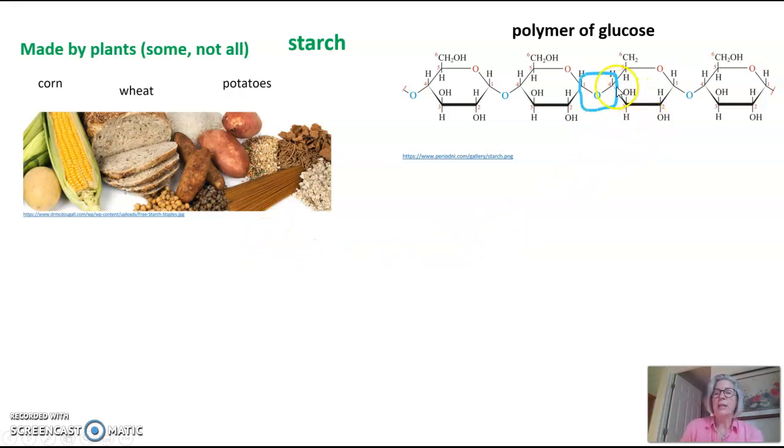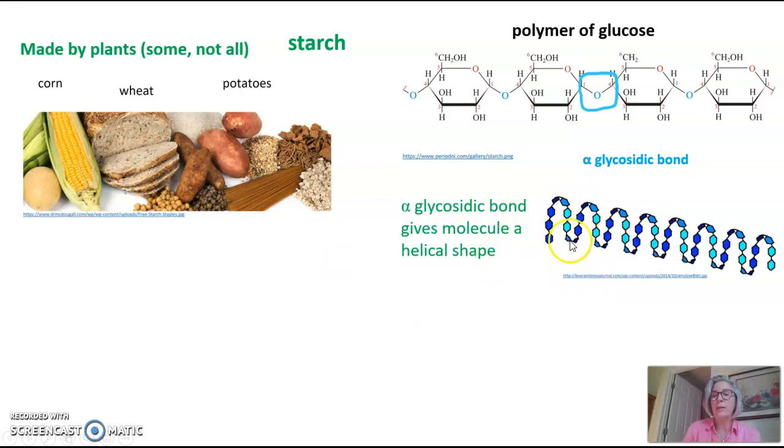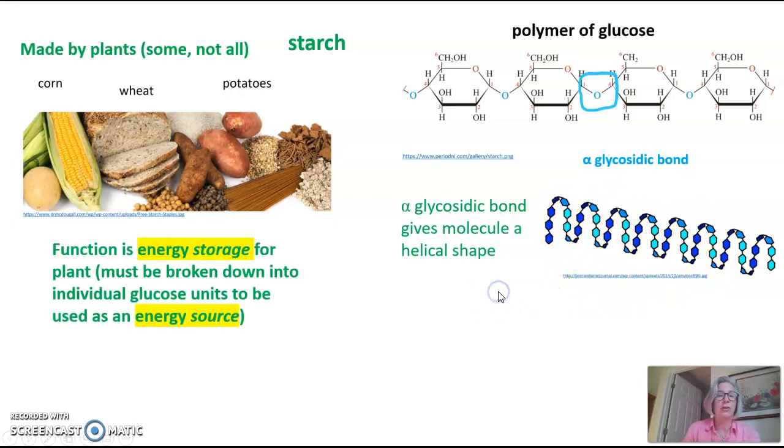These glucose polymers in starch are linked together by what's called an alpha glycosidic bond. It has a specific shape, and we always indicate that shape with this down sort of V shape with the oxygen in the middle. That's an alpha glycosidic bond. The alpha glycosidic bond gives the molecule a helical shape, so you can see here it winding up like a curly Q. That's what starch looks like.